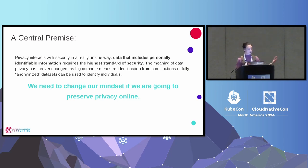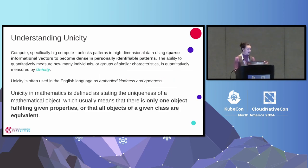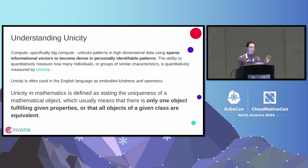Privacy interacts with security in an extremely unique way because privacy that includes personally identifiable information requires the highest standard of security in most or every compliance mechanism or regulatory framework we have on earth. The meaning of data has changed because big compute makes it much easier to re-identify individuals. We have to change our mindset. This is the concept mathematically of unicity — the ability to find the right data sets to re-identify an individual or a group of individuals in a sparse vector data set.